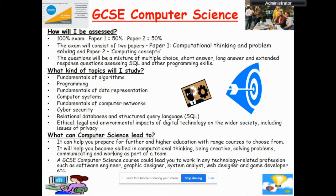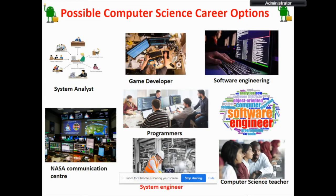What can Computer Science lead to? It can help you prepare for further and higher education with a range of courses to choose from. Possible Computer Science career options include System Analyst, Game Developer, Software Engineer, Programmer, NASA Communication Center Operator, System Engineer, and Computer Science Teacher.